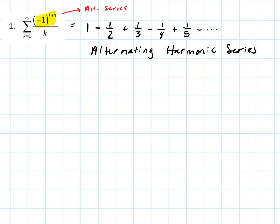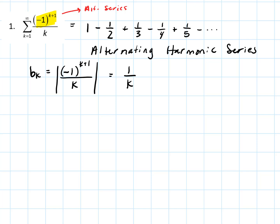This is an interesting connection to the harmonic series, which we showed diverges. But this series with the alternating sign is going to do something else. The first thing we do is define b sub k as the absolute value of a sub k. Applying the absolute value just knocks off the switch and we get one over k.